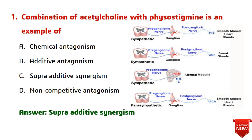The answer is supra additive synergism. Chemical antagonism means a drug reduces the concentration of an agonist by forming a chemical complex. Additive antagonism means the net effect of the combined chemical interaction is zero — one essentially cancels out the other. Supra additive synergism means a mixture of two or more drugs produces a greater response than expected — greater than the sum of their individual effects — which is what we observe with acetylcholine and physostigmine. Non-competitive antagonism means binding to an allosteric site on the receptor to prevent activation.